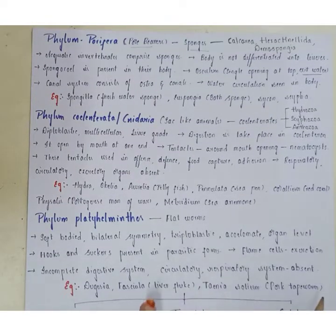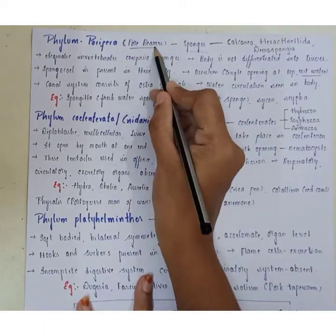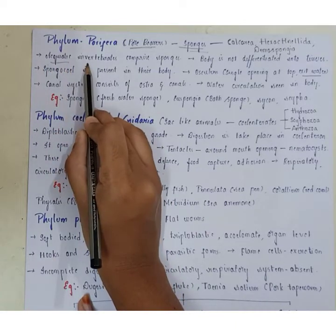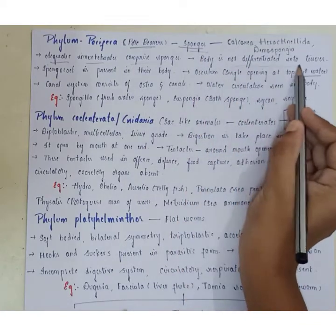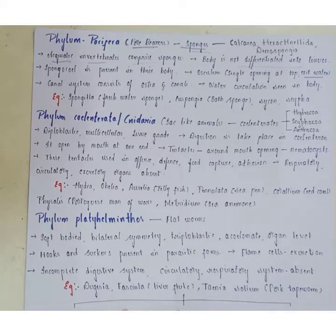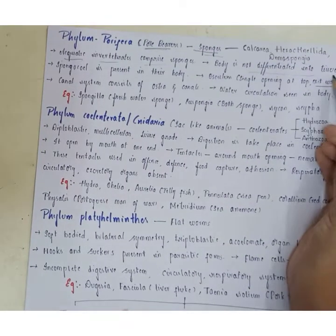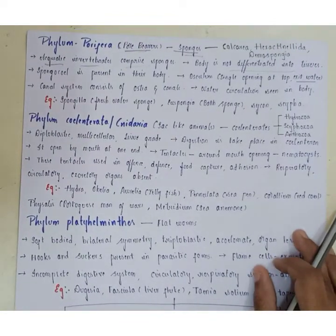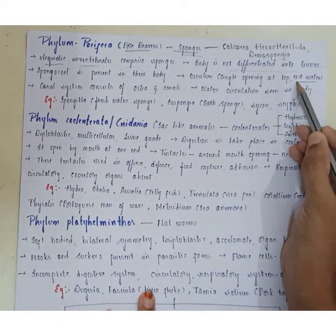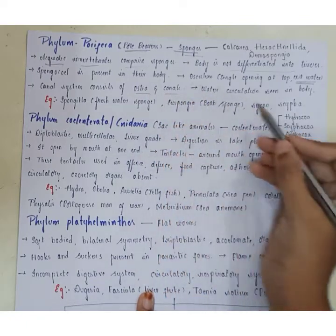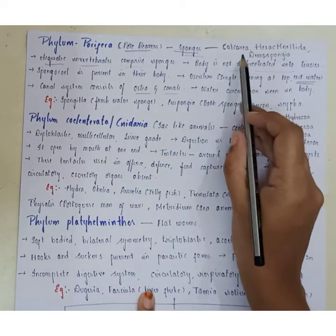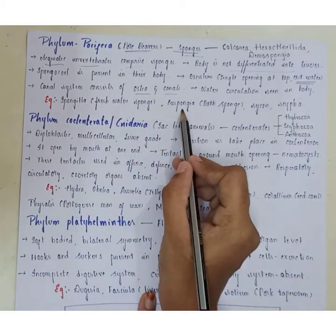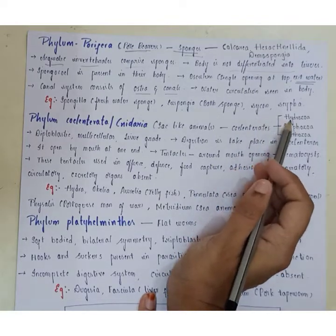Phylum Porifera is also called pore bearers and commonly known as sponges. These organisms are aquatic invertebrates. The body is not differentiated into tissues — they exhibit a cellular level of organization. Pores called ostia are present in the body. The osculum is a single opening at the top useful for the exit of water. The canal system contains ostia and canals for water circulation. It is classified into Calcarea, Hexactinellida, and Demospongiae. Examples include freshwater sponge, bath sponge, Sycon, and Scypha.